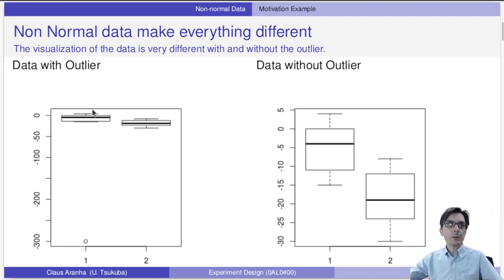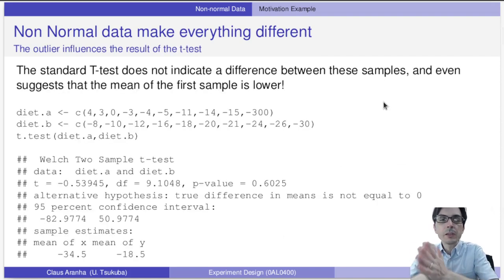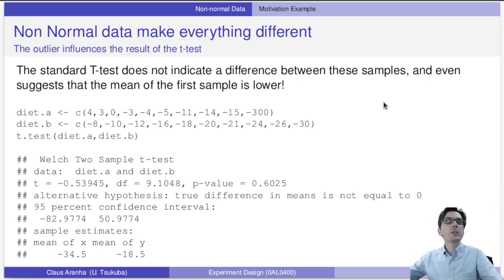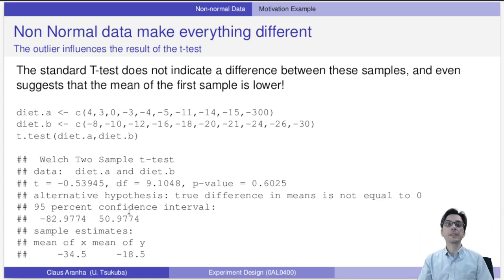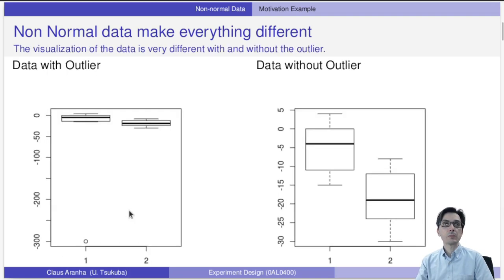When we remove the outlier, the samples look very different. If we just put both datasets into a t-test without thinking, we see a p-value of 0.6 and a 95% confidence interval of the difference between the two samples between minus 80 and 50 — a huge confidence interval with zero in the middle. The t-test indicates we cannot see a clear difference, but the data is actually quite different.